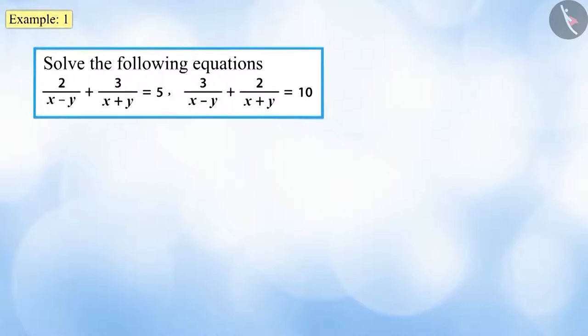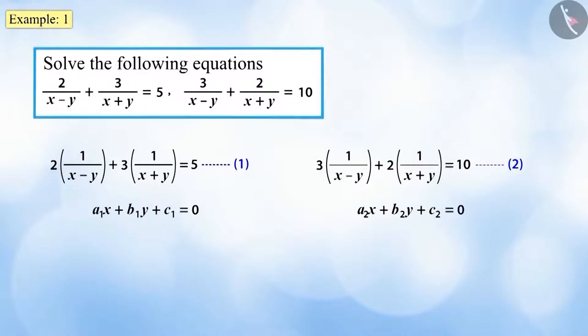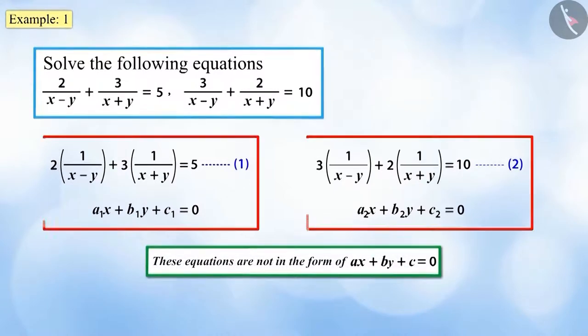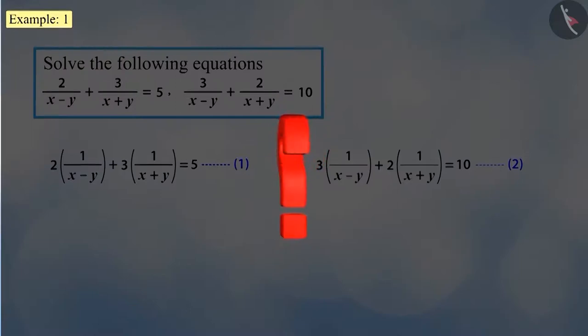Solve the following pair of equations. If this pair of equations is written like this, then you will observe that this is not the form of a pair of linear equations because ax plus by plus c is not equal to zero. Can you tell me what can we do to solve this pair of equations?